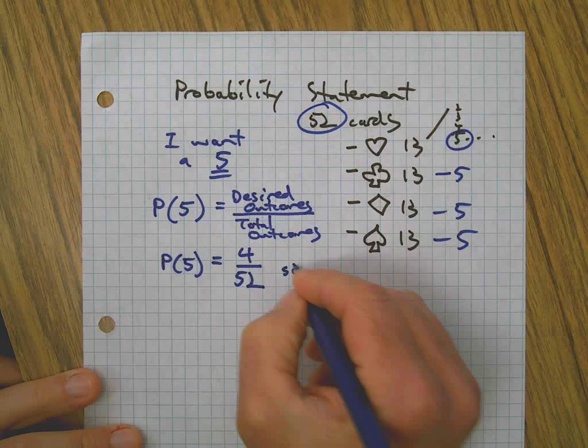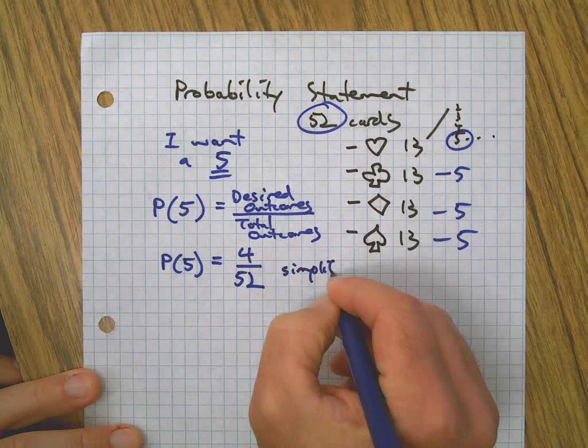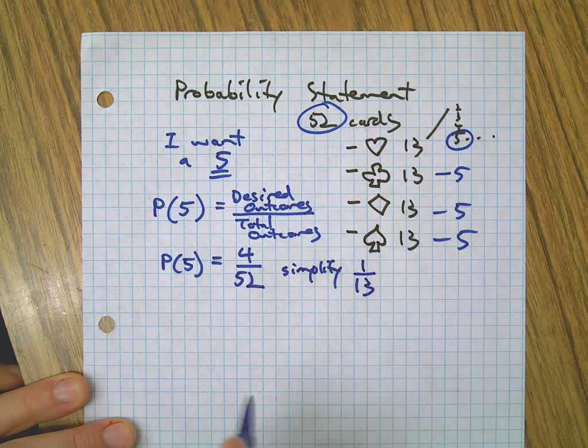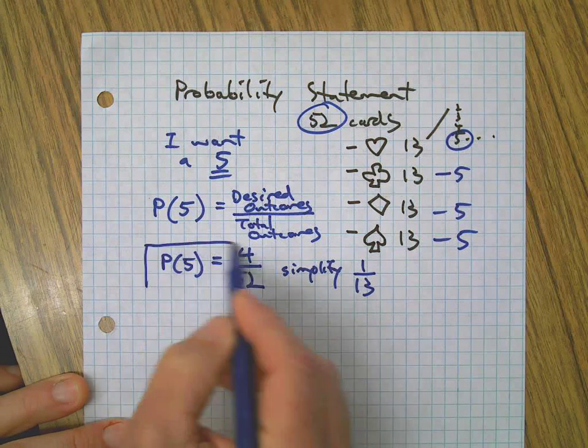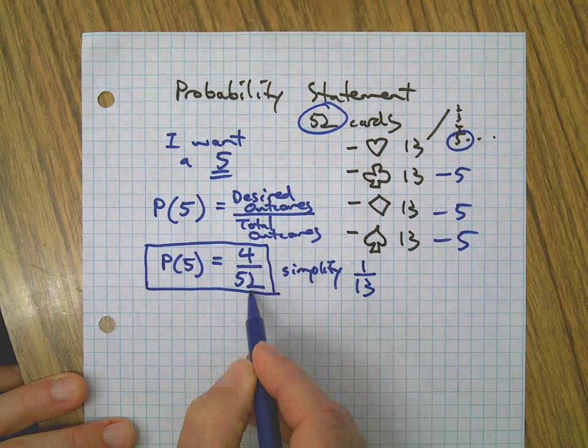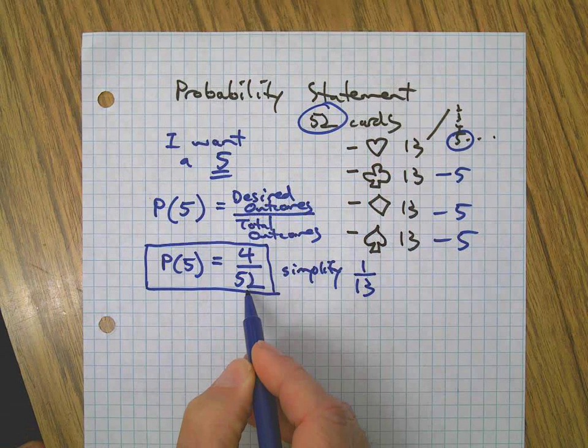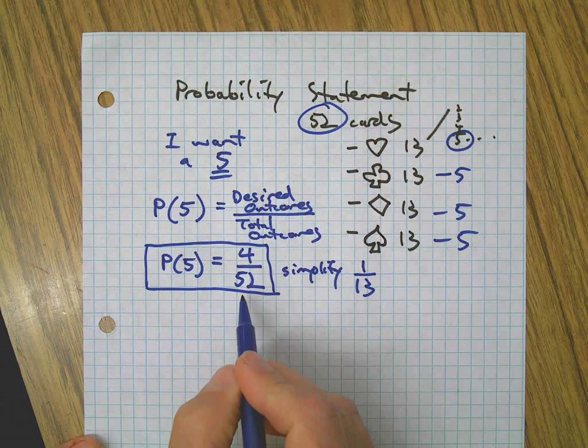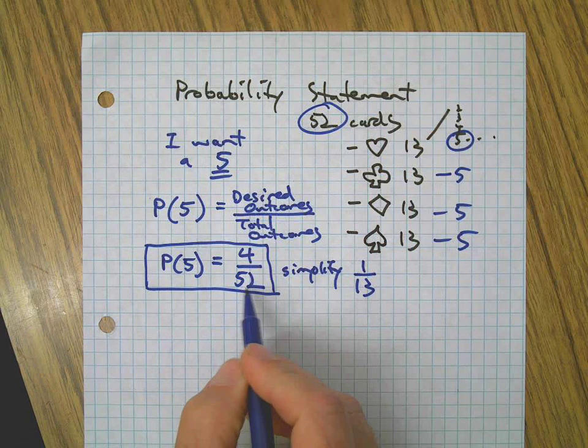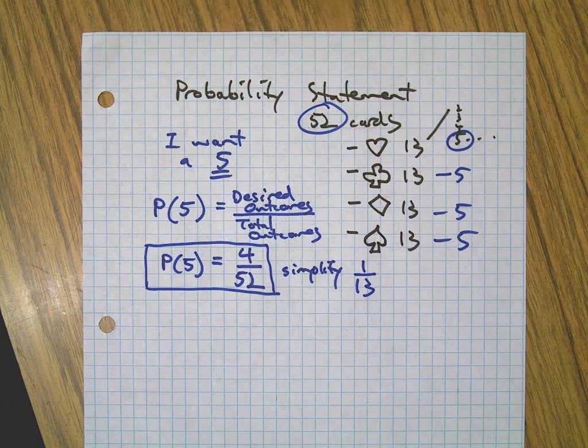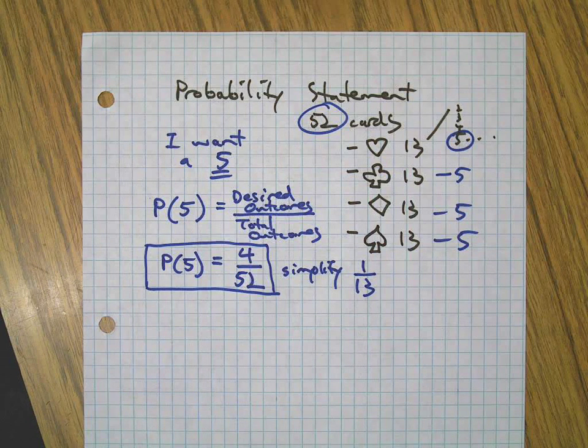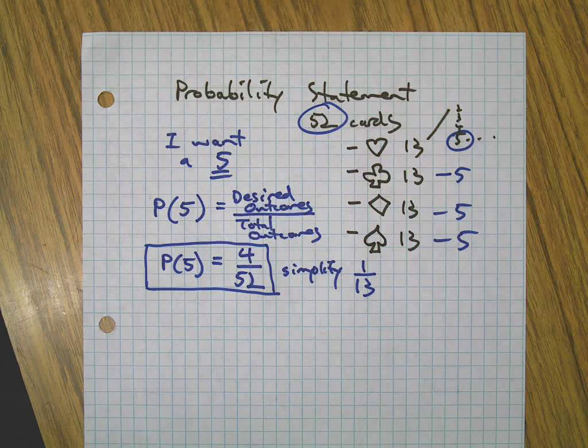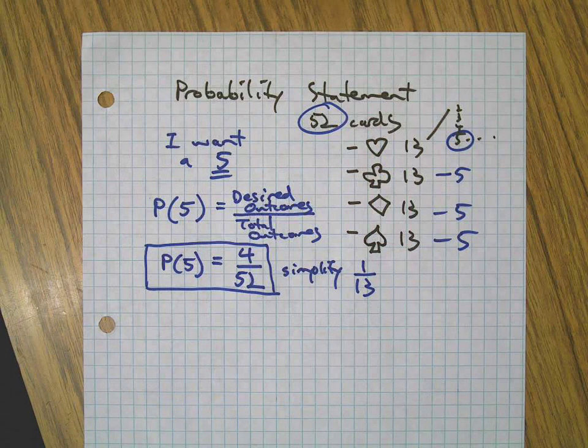Now if you wanted to, you could simplify this to 1 out of 13. But really, this is the true statement here because there are actually 52 unique outcomes. So once you simplify it, now you're doing math. This is truly the probability statement because it's got all the outcomes and all the desired outcomes. 1/13 is just a simplified version of that. It's not actually the probability. That make sense?